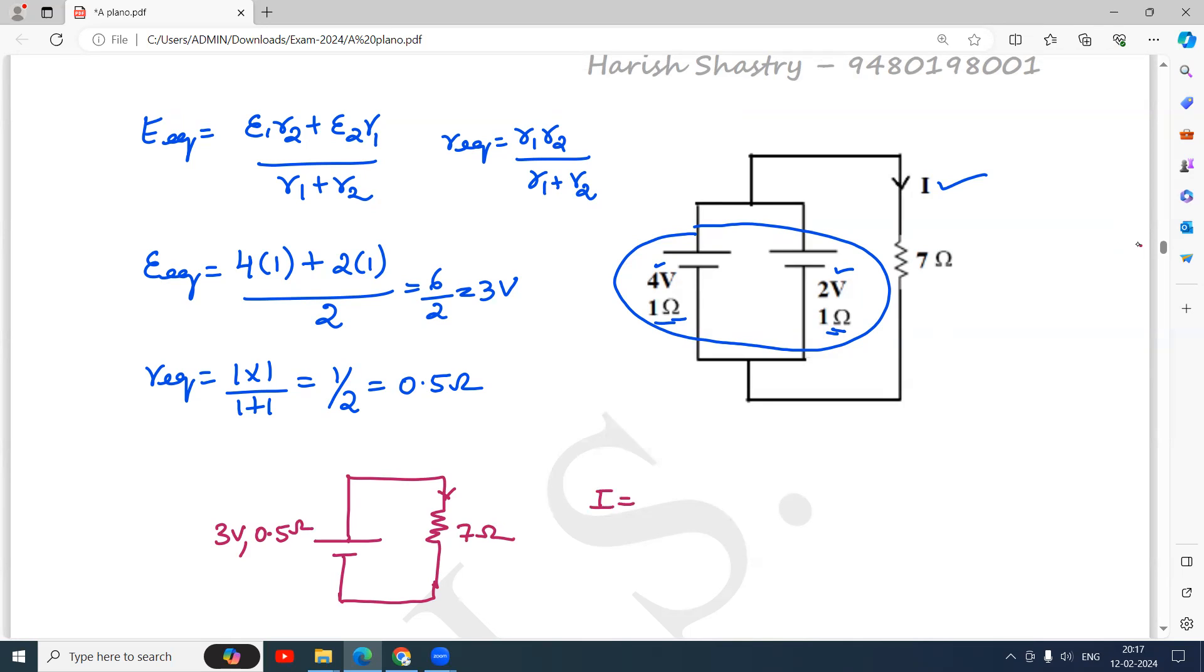So what is I? I is equal to E by R plus r. That implies I is equal to E, E is 3 volt, R plus r is 7 plus 0.5.